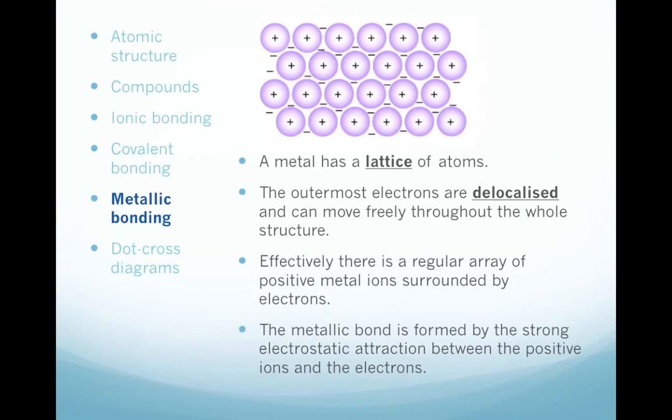So the third kind of bonding we need to know about is metallic bonding. In a metal, where it's an element, you've got a lattice of atoms. That means a regular arrangement of atoms. And the outermost electrons of these atoms are able to move around. They can move freely within the piece of metal. We say that they are delocalised.